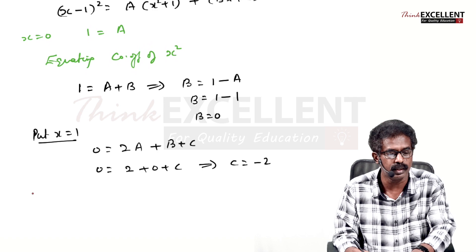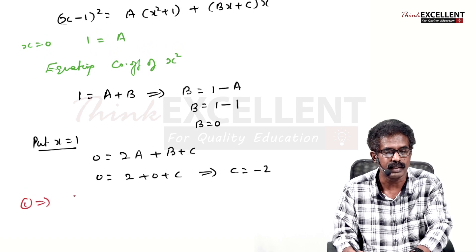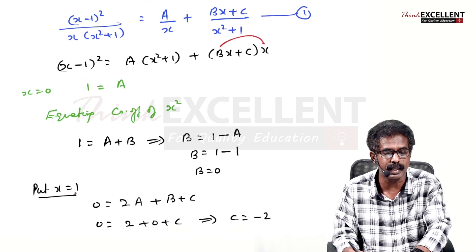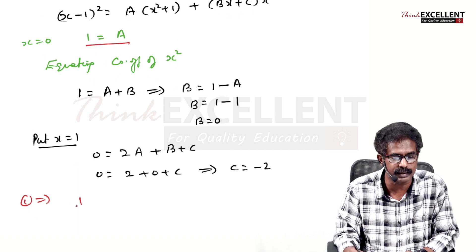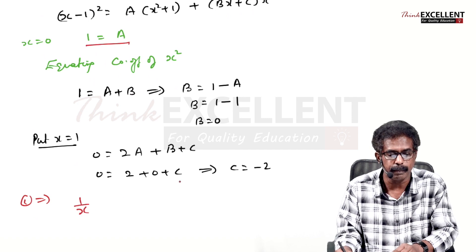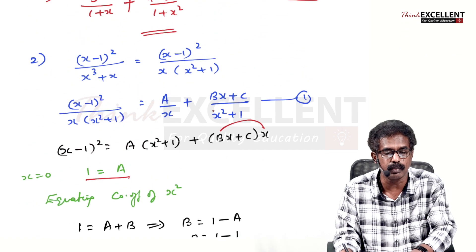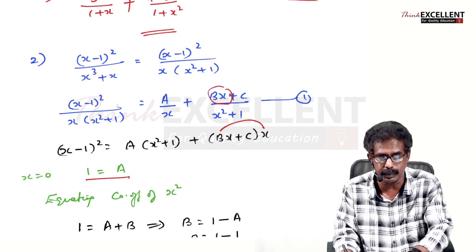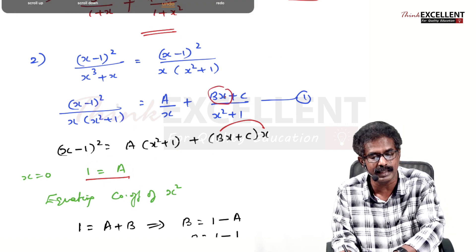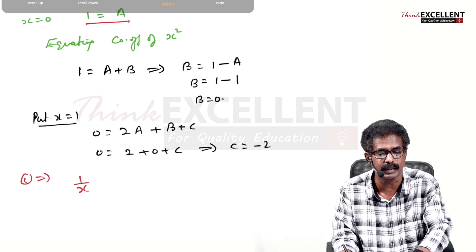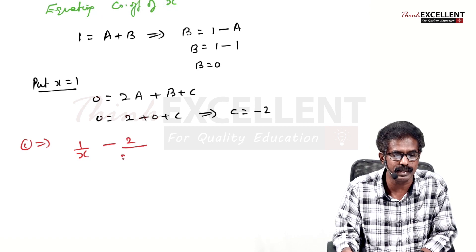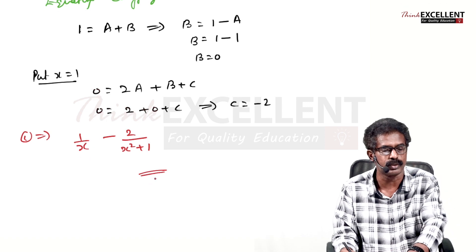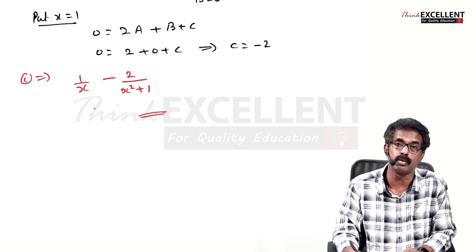All values found: A=1, B=0, C=-2. Substitute back: the answer is 1/x + (0·x + (-2))/(x²+1) = 1/x - 2/(x²+1).